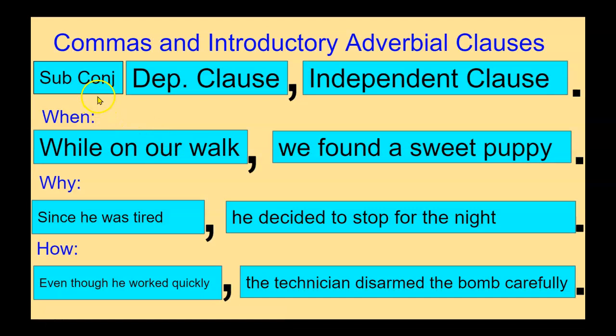So here's my structure. You start the sentence with a subordinating conjunction — while — then you have your dependent clause, and then you have your independent clause at the end. In this construction, you're always starting with a dependent clause and ending with an independent clause. For example: while on our walk, comma, we found a sweet puppy.